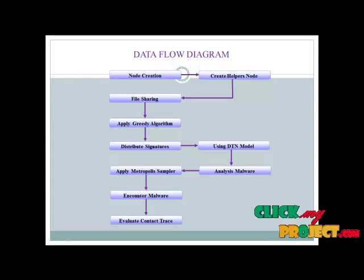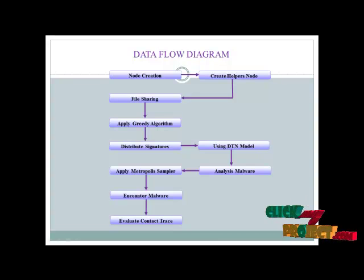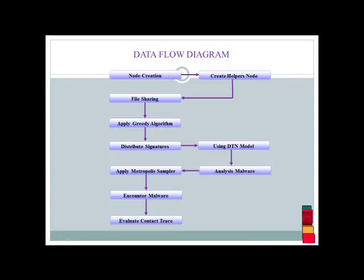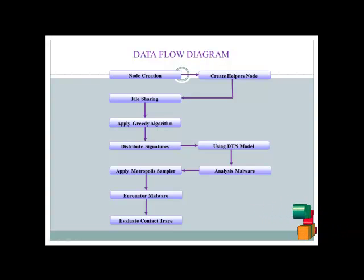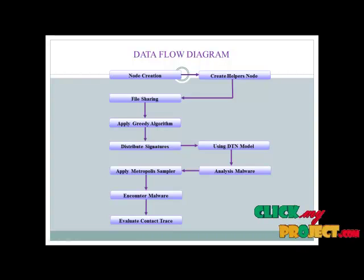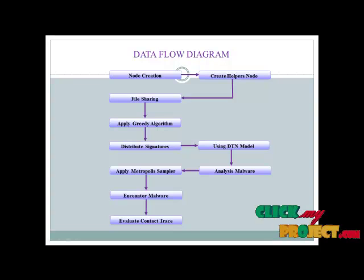Based on this, distributed signatures are spread to the helper nodes using the DTN model — that is, Distribution Transaction Node. Then malware is analyzed using the distributed signatures and the metropolis sampler, which means a combination with each other. Then we find out the malware and counter it, and evaluate the contact risk — a performance evaluation between the existing and proposed system in terms of encountering malware according to the proposed algorithms and techniques.